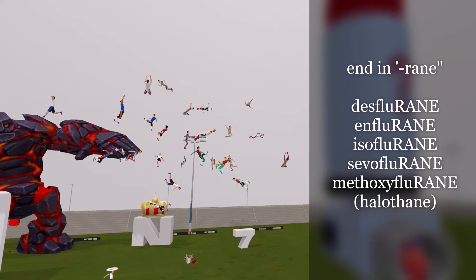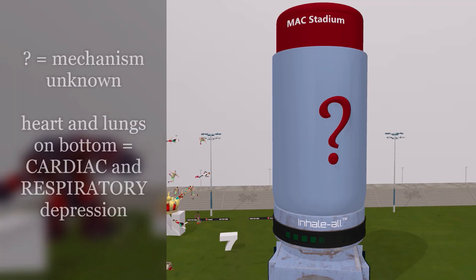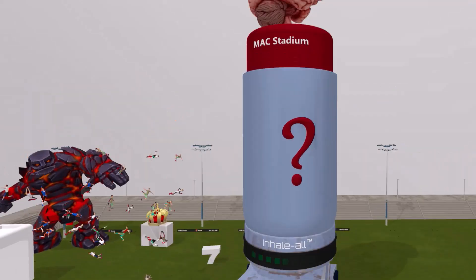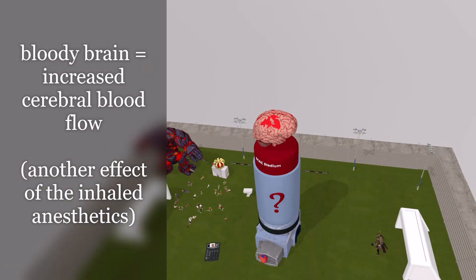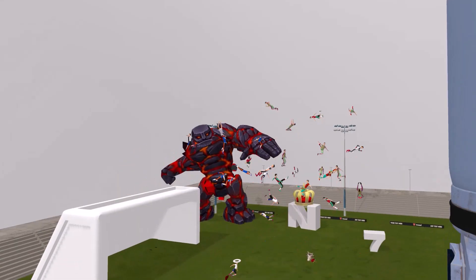On the inhaler, there is a question mark, reminding us that the mechanism of inhaled anesthetics is ultimately unknown. At the bottom of the inhaler, a heart and pair of lungs remind us of the myocardial depression and respiratory depression these anesthetics cause. On top of the inhaler, a bloody brain balancing up high reminds us that inhaled anesthetics increase cerebral blood flow.